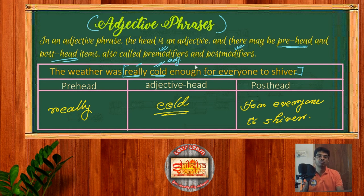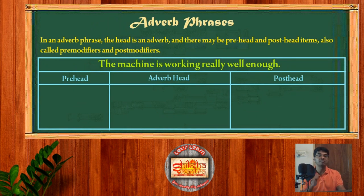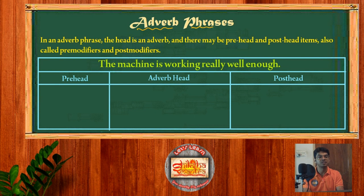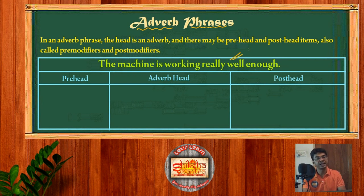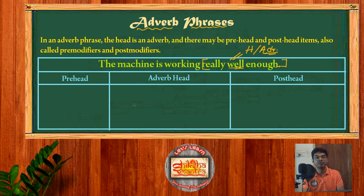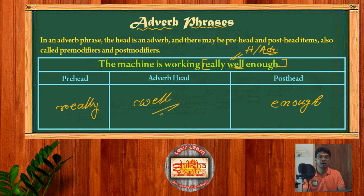Now, another very important phrase we very frequently find in our language is the adverb phrase. All the other principles are the same — just jump into the example: 'The machine is working really well enough.' So 'well' is the head, and it's an adverb — there's no confusion that this is an adverb phrase. 'Really' is connected with this adverb, so 'really' is the pre-head and 'enough' is the post-head. So 'really well enough' is the phrase, where 'well' is the adverb head, 'really' is the pre-head, and 'enough' is the post-head. It's very simple.